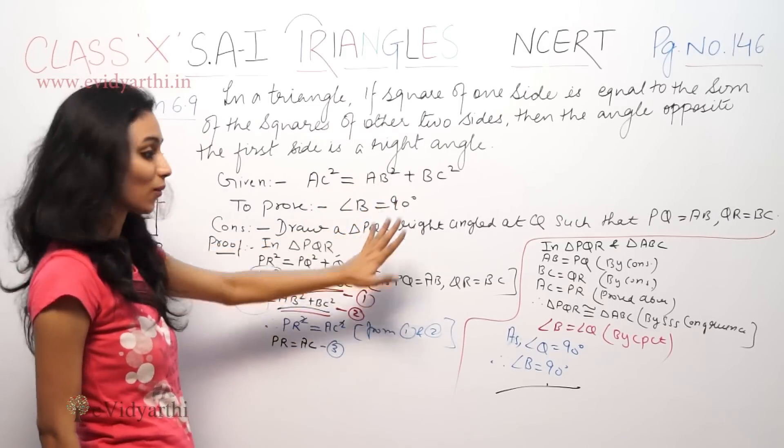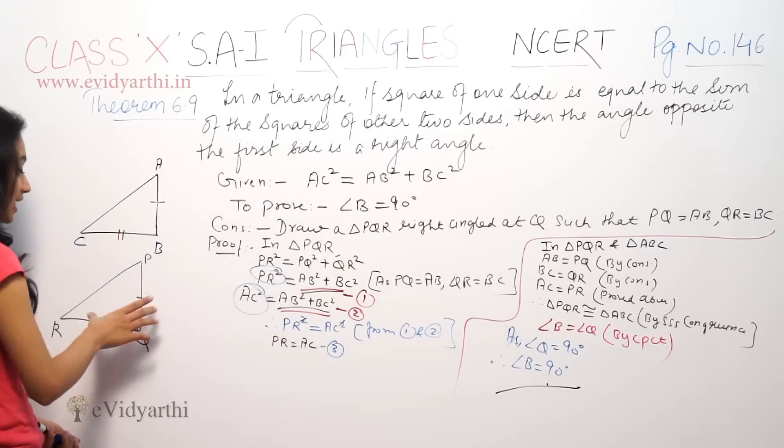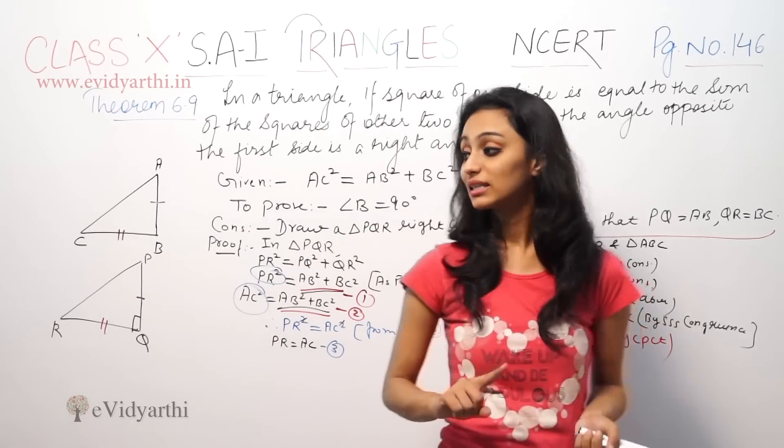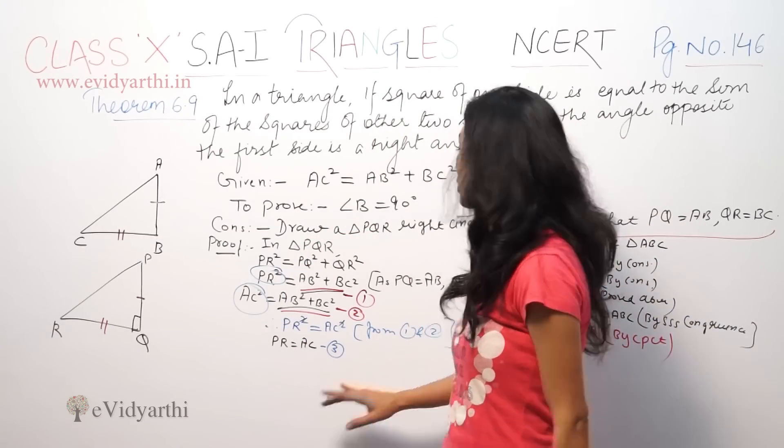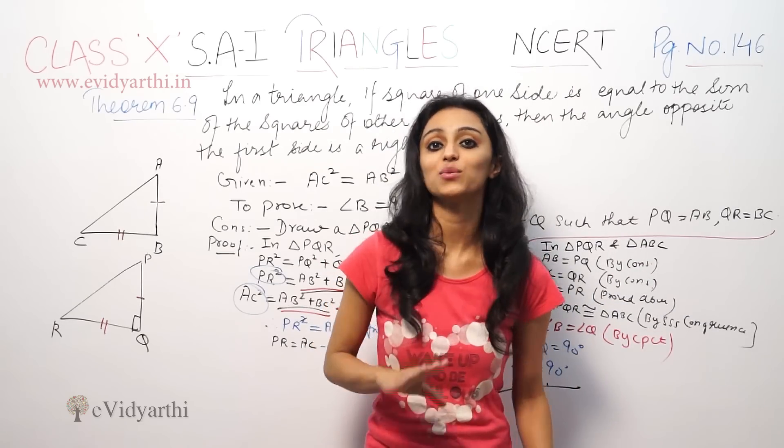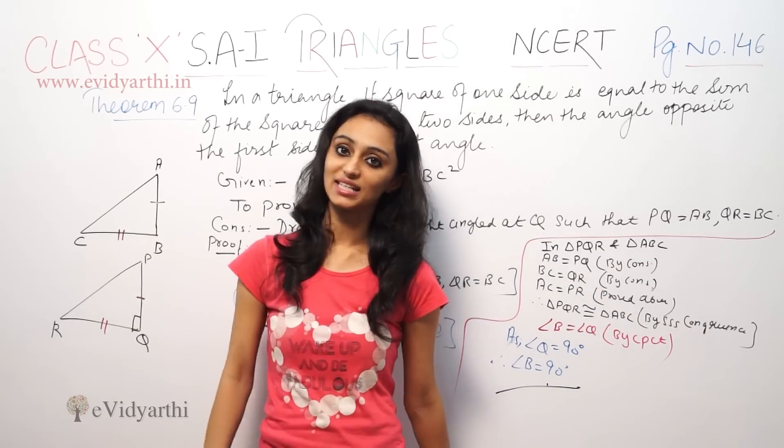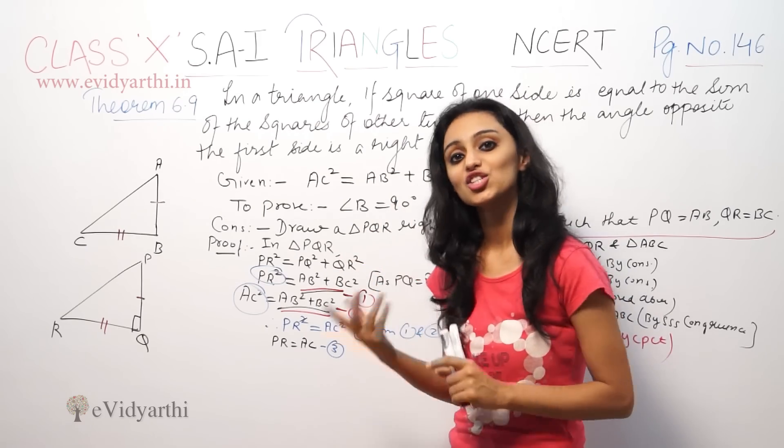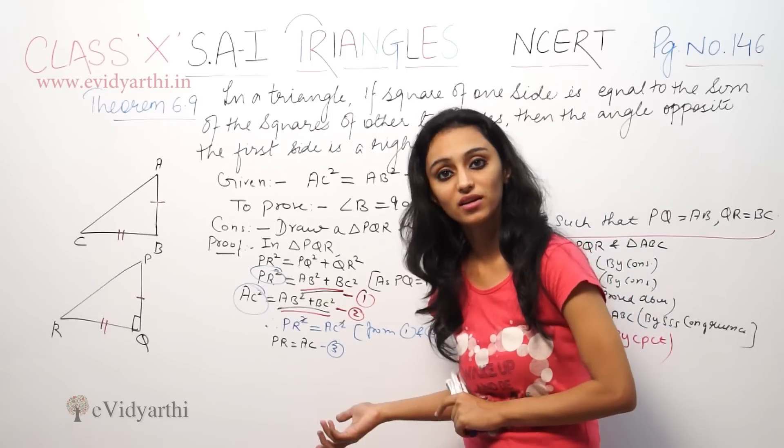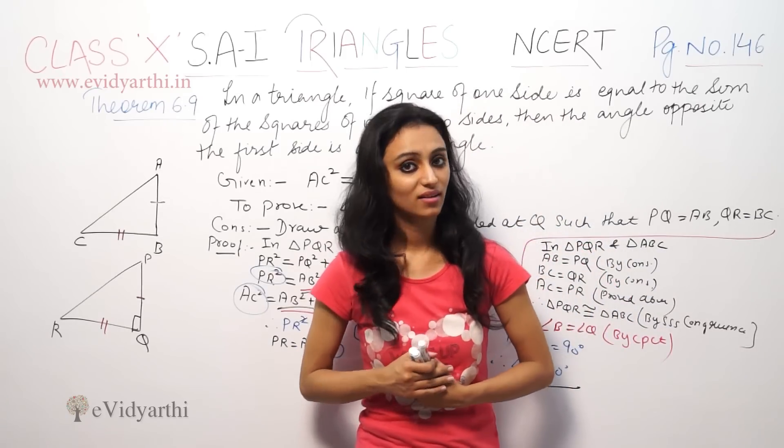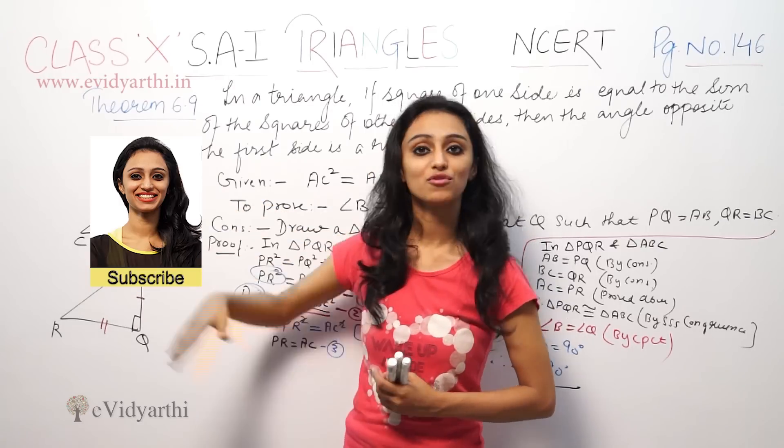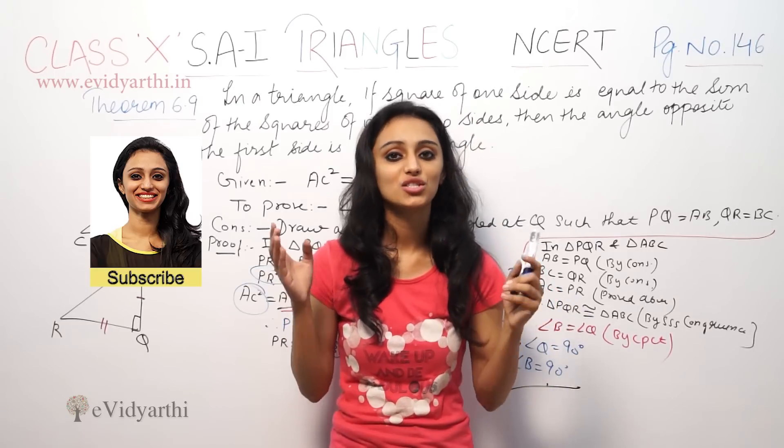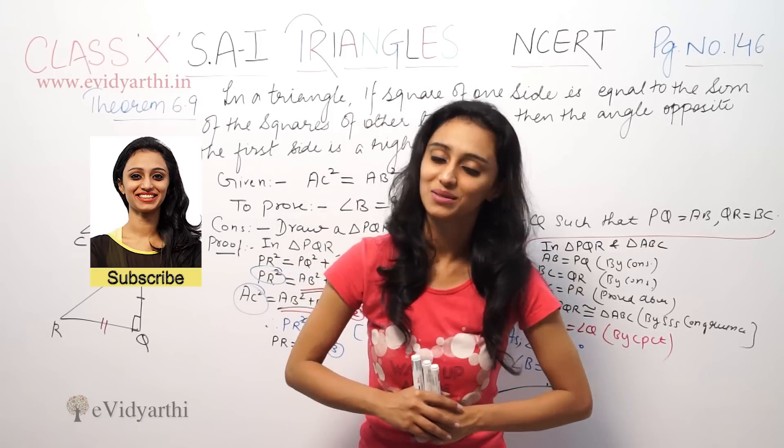So, this was a simple proof. First of all, we had two triangles. We constructed a new triangle with a right angle already given. Then we made both triangles congruent using CPCT. This was your theorem. This theorem is used in your questions. This is Converse of Pythagoras Theorem. This was Theorem No. 6.9 from your NCERT. If you don't understand anything or have doubts about questions, please let us know. And do subscribe. Goodbye.